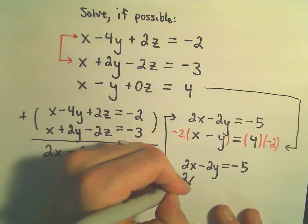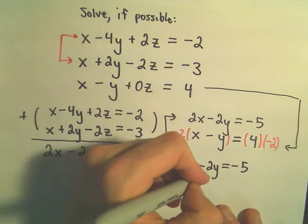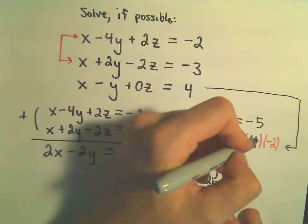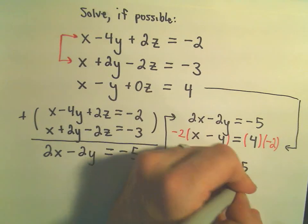We'll get negative 2x. We'll get negative 2 times negative y, which is positive 2y. We get 4 times negative 2, which is negative 8.